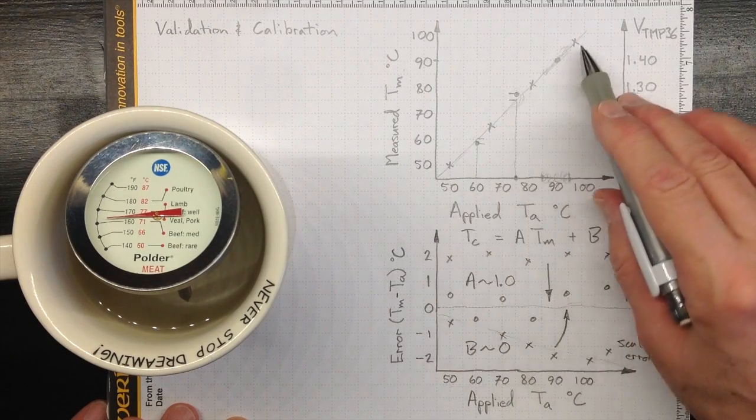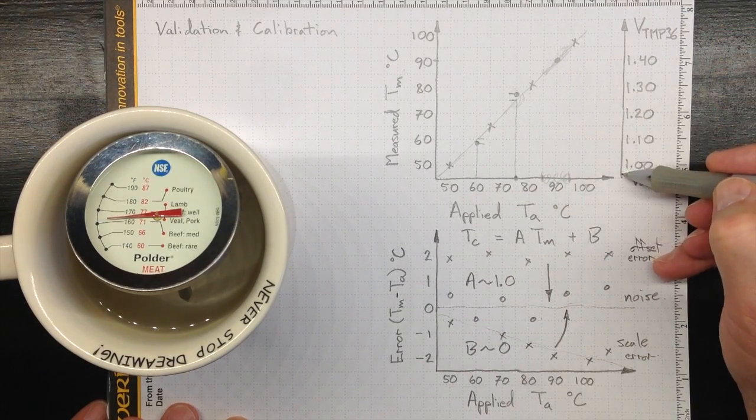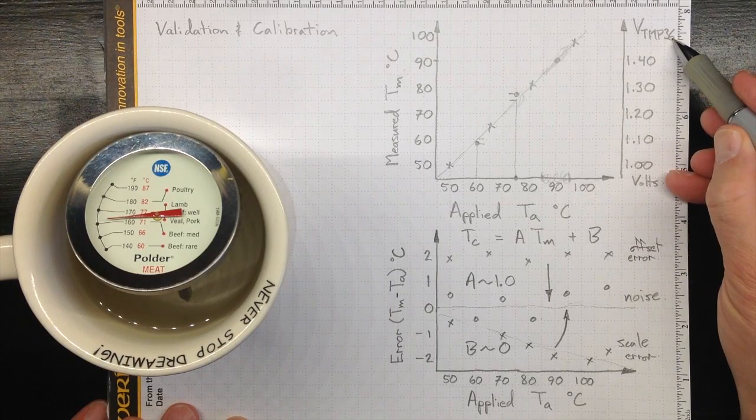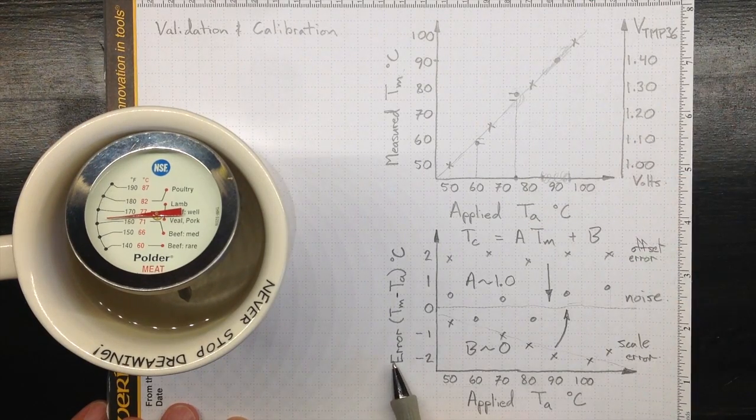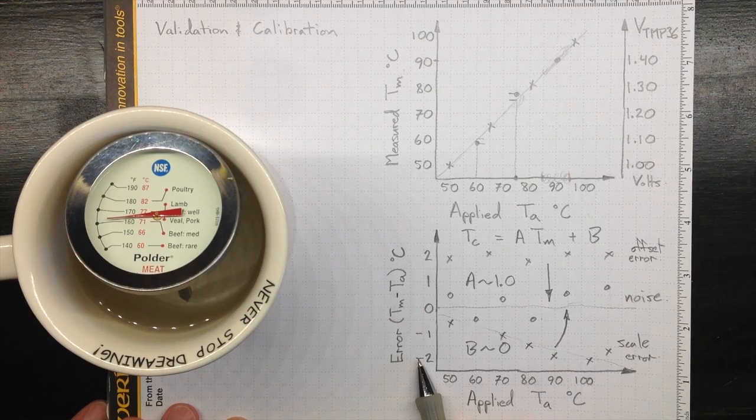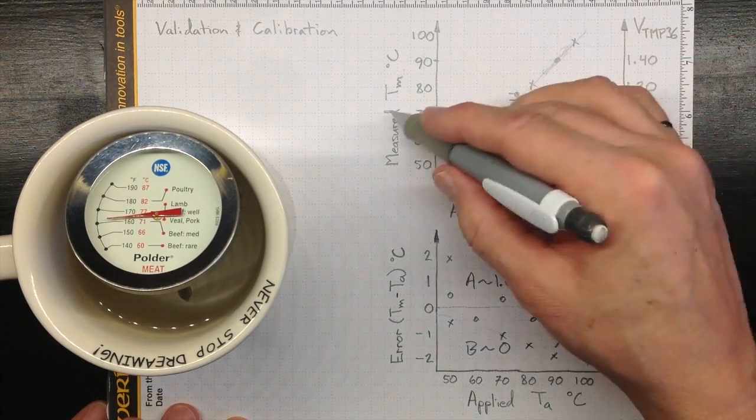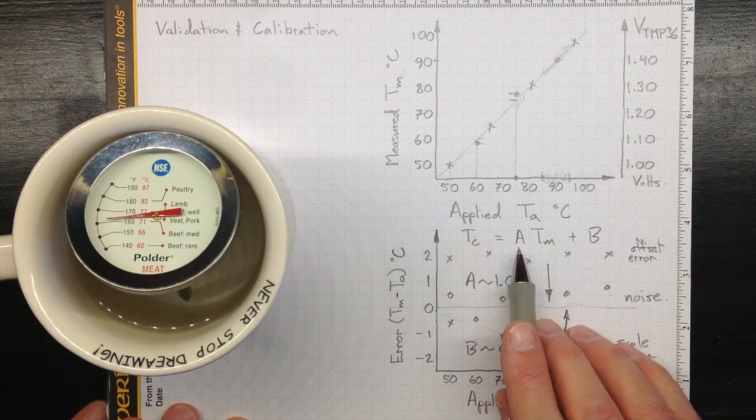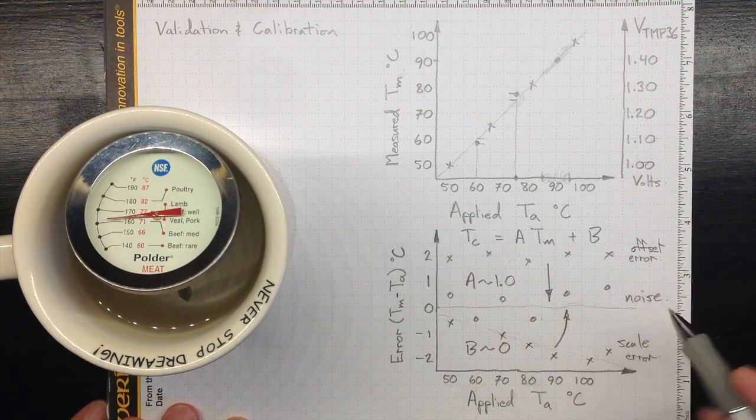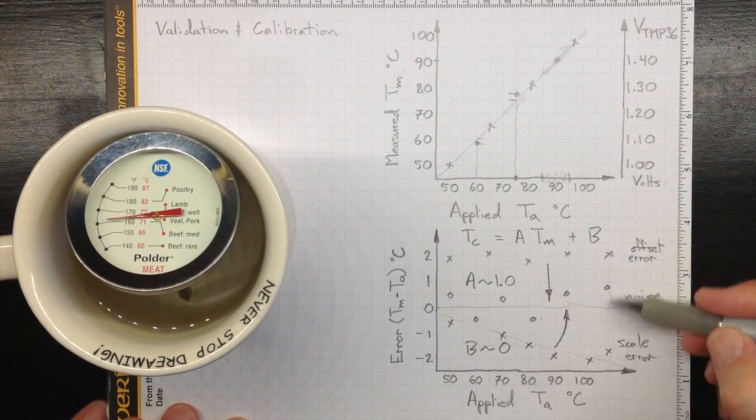We can draw exactly the same type of graph if we're calibrating a TMP-36 transducer. We can do exactly the same kind of error plot after converting this through the relationship over to temperature. And we can do exactly the same calibration adjustment to fix errors like this.